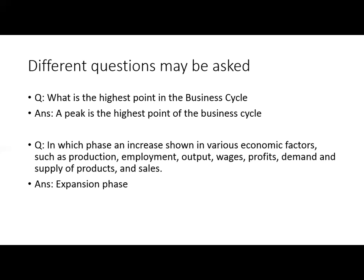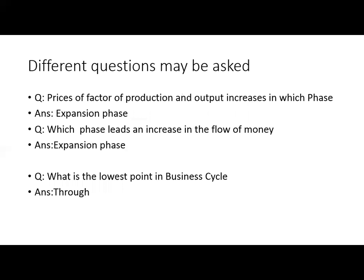In which phase is an increase shown in various economic factors such as production, employment, output, wages, profits, demand and supply of products, and sales? When prosperity comes, when things are available and a little bit of inflation is going on, that is the expansion phase. Similarly, when prices of factors of production and output increase, that is also the expansion phase.